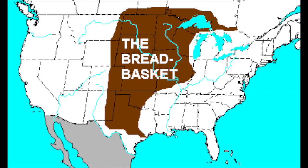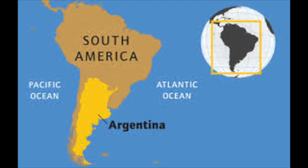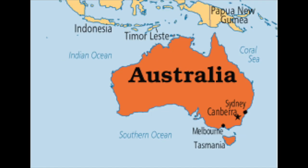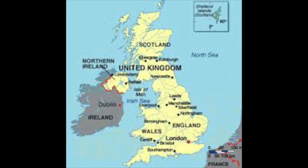The United States and Canada make up about 50% of the wheat exports in the world, so we are known as the world's bread basket because of the amount of wheat we produce and export to countries like China. Other countries very big into grain farming include Argentina, France, Australia, and the United Kingdom.